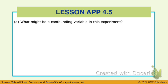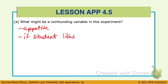What might be a confounding variable in this experiment? One answer: appetite — whether or not the students had eaten before they came in. Another: whether the student likes brownies or not. We're giving everybody brownies, but what if you don't like them? Also: food allergies — maybe they want to eat the brownie but can't because they're allergic. Those are the main confounding variables that could influence the results.